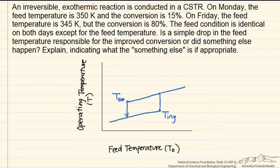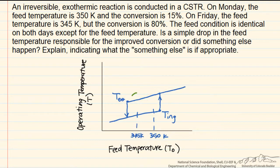One thing that would be consistent with this observation is that if initially we were operating at 350 Kelvin, we had an upset in the positive direction that led to an ignition event, so that we were operating somewhere in the upper region. Then we cooled back down to 345 Kelvin, but we were still on the upper part of the hysteresis curve, operating at a higher temperature. So one possible explanation for this data is that multiple steady states are possible, and we ignited and ended up on the upper curve of the ignition-extinction curve.